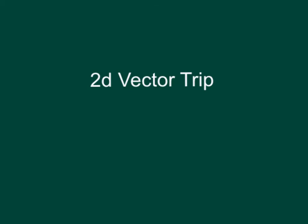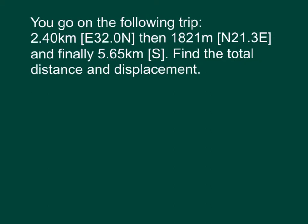Solving for the two-dimensional vector trip. Here's our question. We're going to go on the following trip. There's three parts to the journey. I'm going to go 2.4 kilometers east, 32 degrees north, then 1,821 meters north, 21.3 degrees east, and then our last leg of the journey is going 5.65 kilometers south.